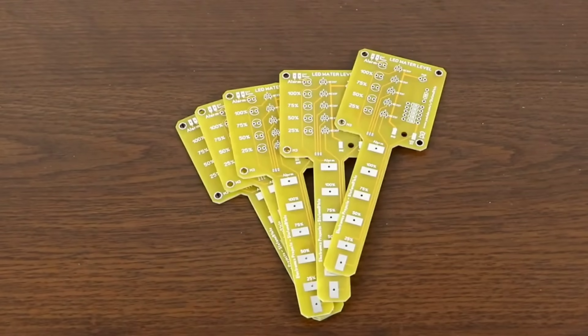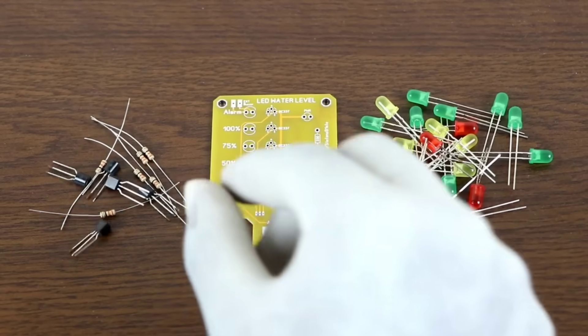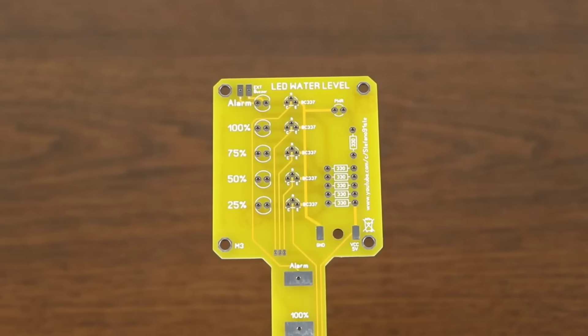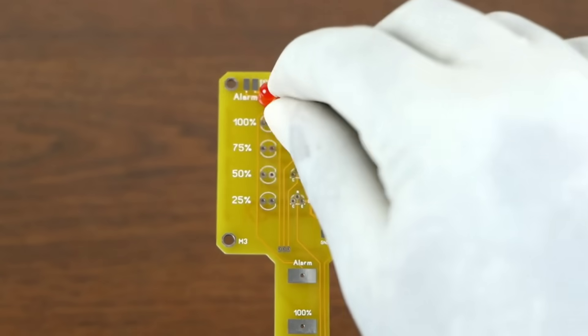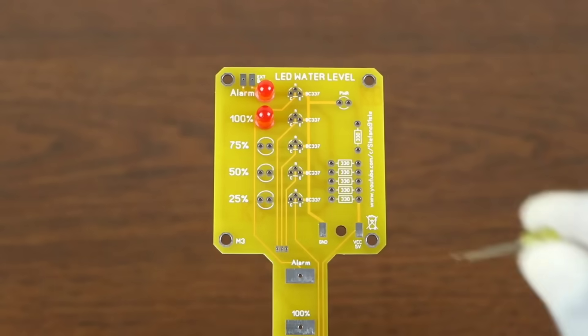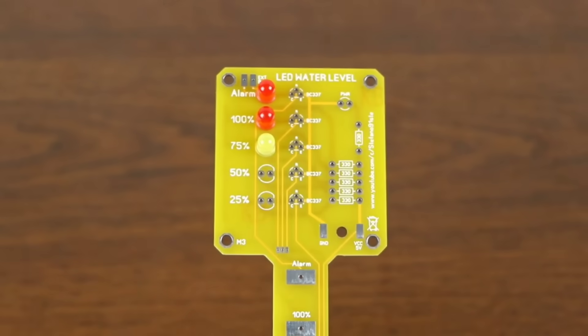Let's move to the making process. The very first components we've used are 5 LEDs which will act as level indicators, and 547 transistors and 1K resistors. These are simple parts but they play a very important role in sensing the water level and controlling the LEDs.